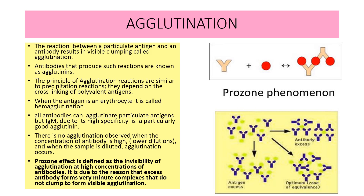The antibodies that produce agglutination reaction are known as agglutinins. The principle behind the agglutination reaction is similar to precipitation reaction, and they depend upon cross-linking of polyvalent antigen.